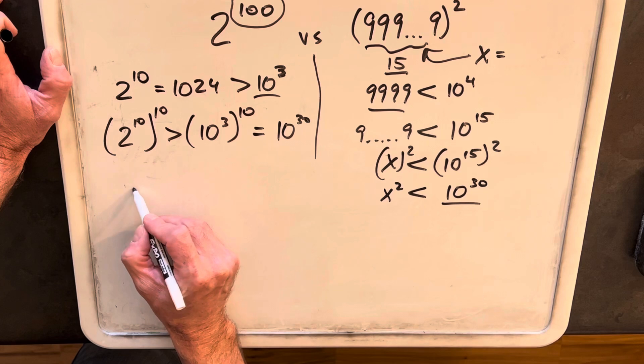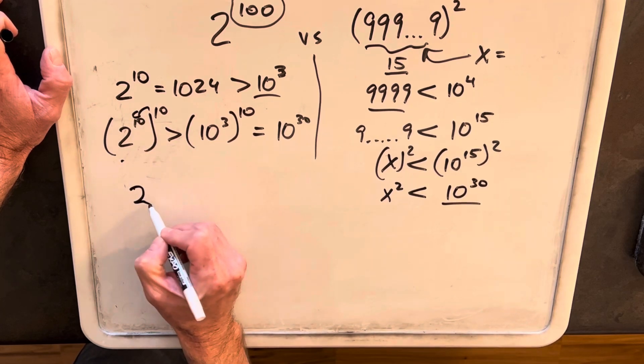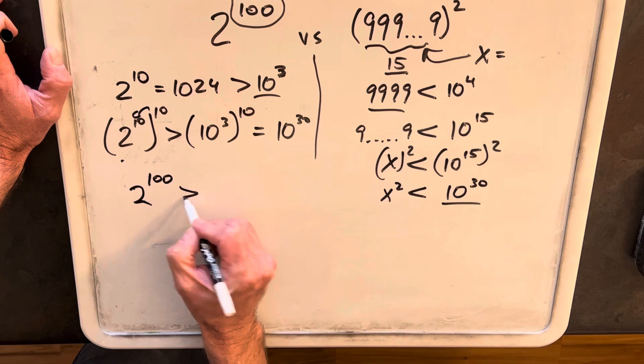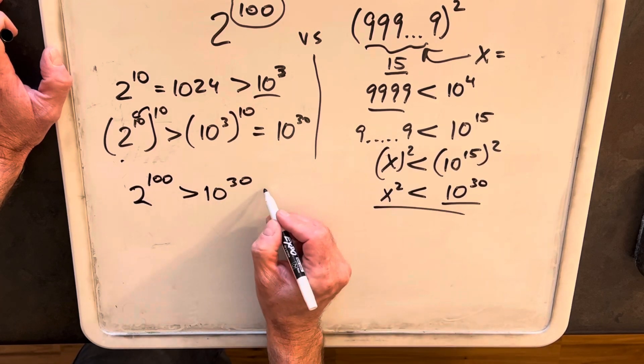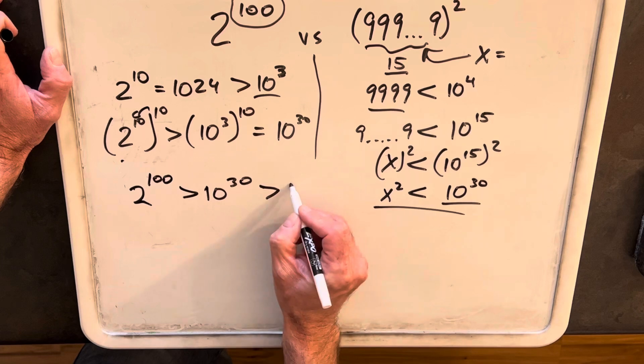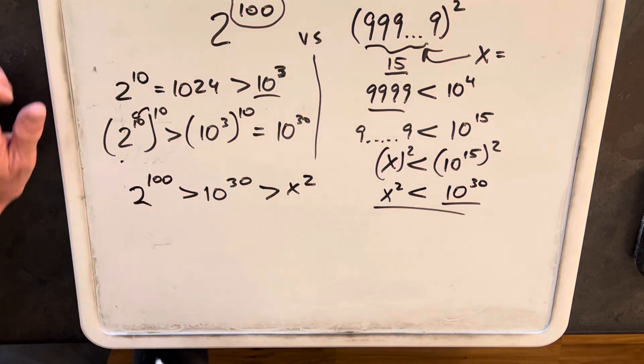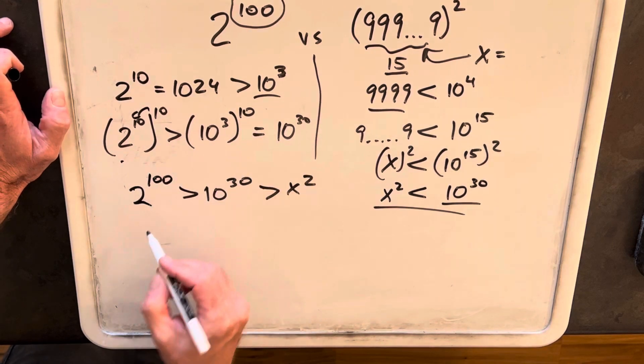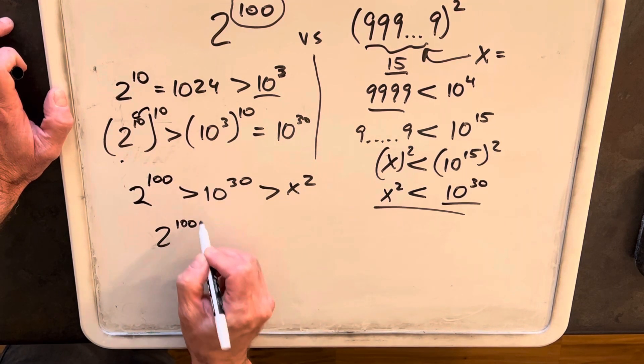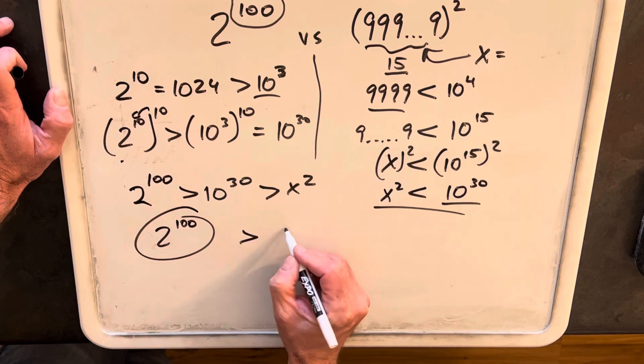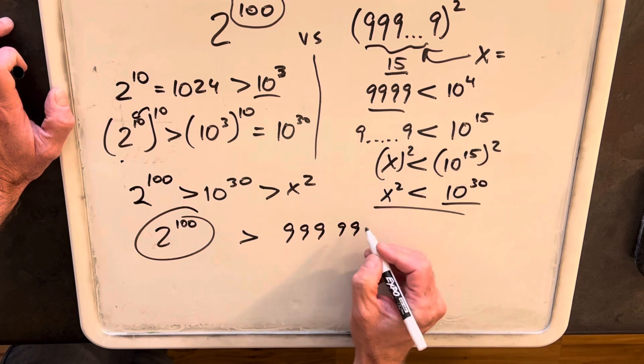So from that, we can say, multiplying this, we have 2 to the 100th is greater than 10 to the 30th, but then using this, 10 to the 30th is greater than x squared. So then we can basically solve it and say that 2 to the 100th is greater than our 15 nines, which is x squared.